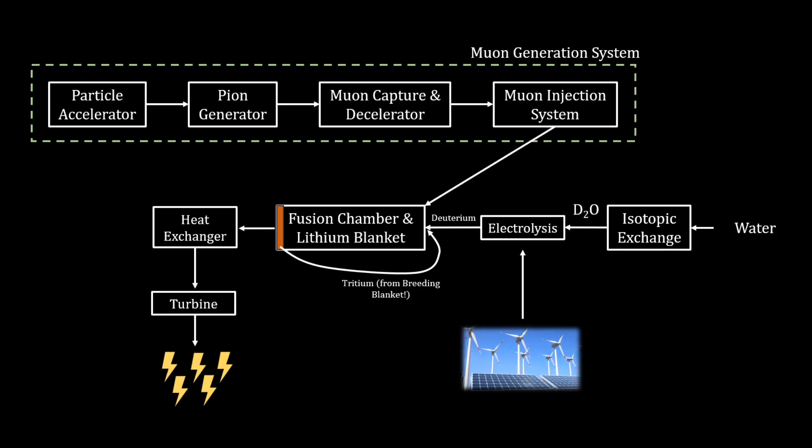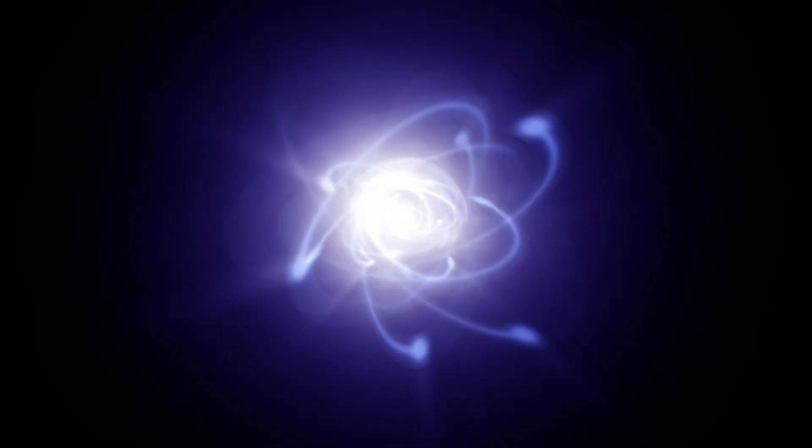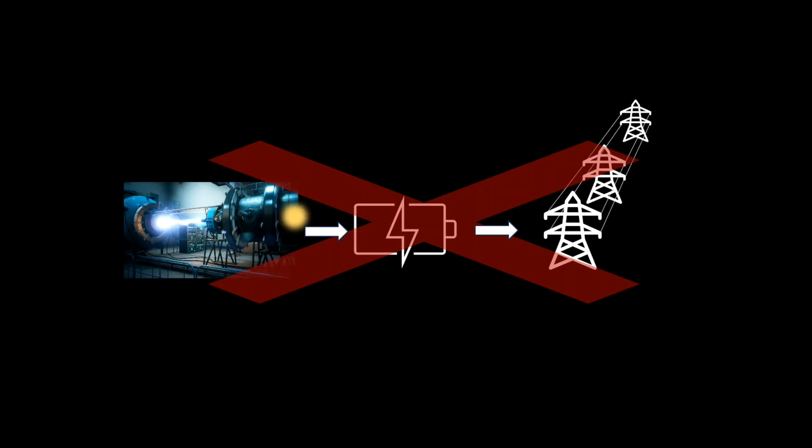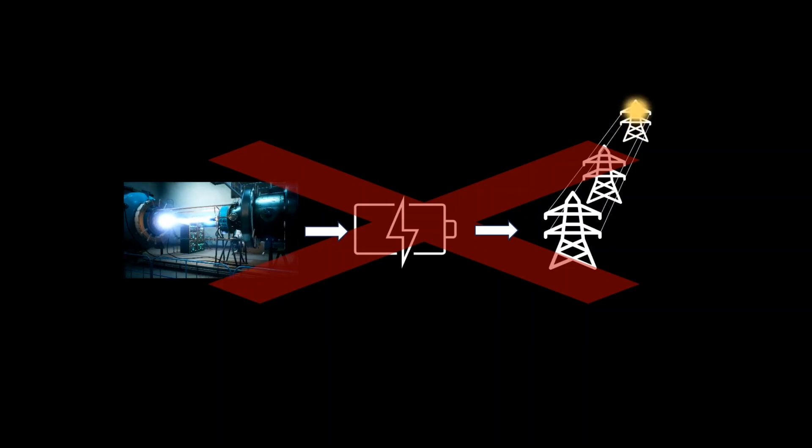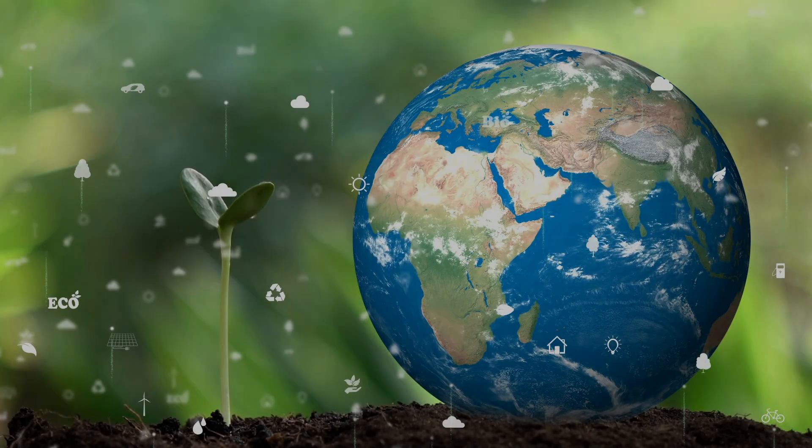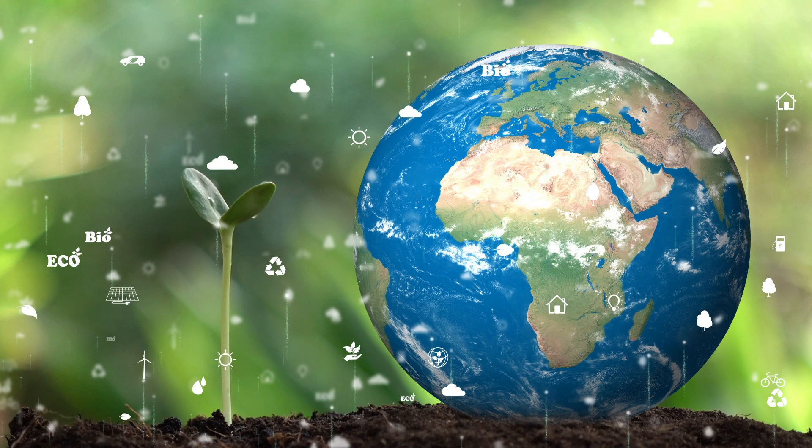The usual safety and control systems would be set up around the plant too. So, whilst muon-catalyzed fusion has been demonstrated, it will not probably be powering up the grid in the near future. The prospect, though, of a clean, high-energy density energy generation technology at normal conditions enabled by muons remains highly exciting, especially in the rundown to 2050 net zero.